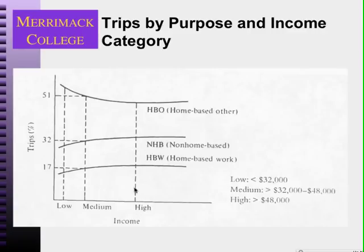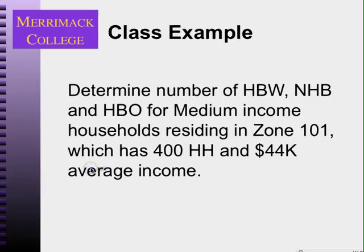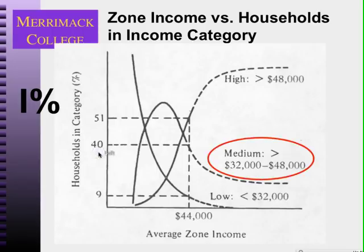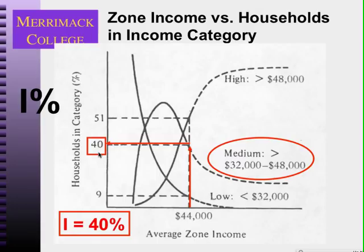I also know for high-income households that the percentage of home-based other trips is about 48–49%. Let's do a quick example: we want to know the number of home-based work trips for medium-income households residing in a zone that has 400 households and an average income of $44,000.